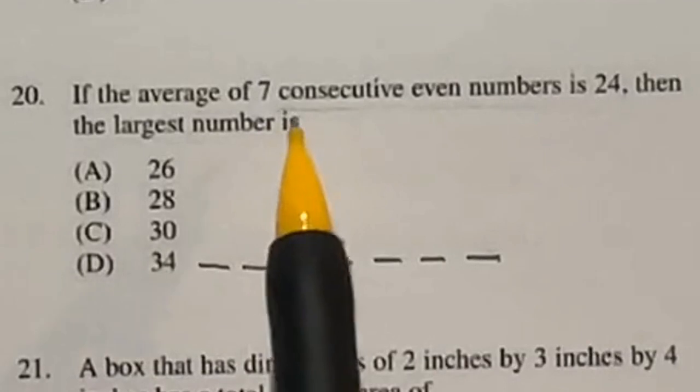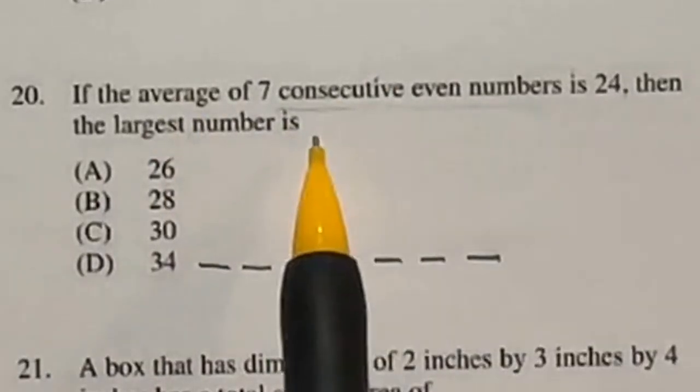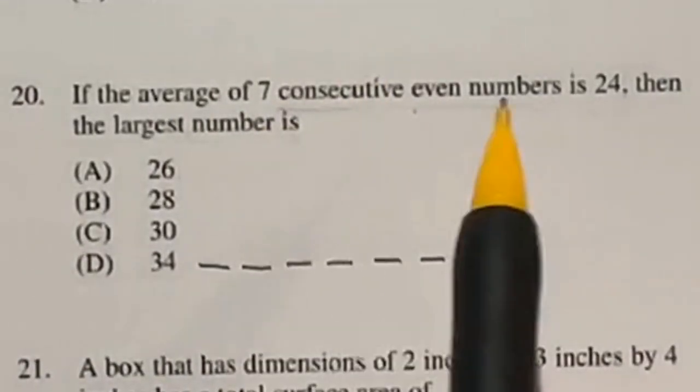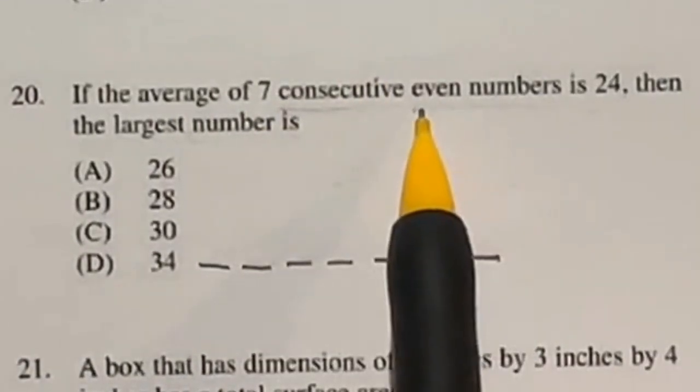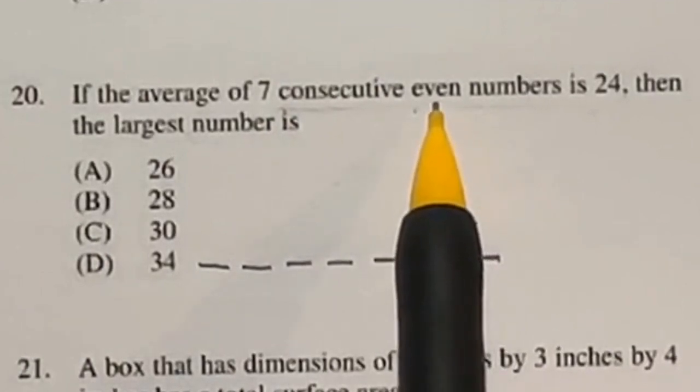So number 20 says that 7 consecutive even numbers has an average of 24. So what's the largest number? First off, consecutive means that it's like one after the other without skipping any. But because they're even numbers, we're going to be leaving out every other number because that would be odd.